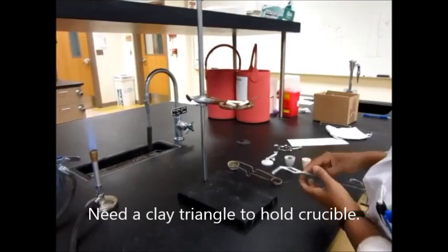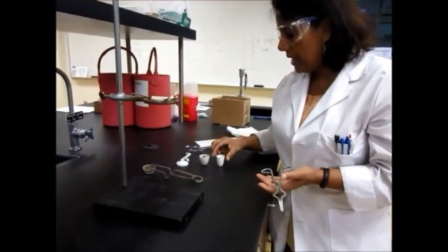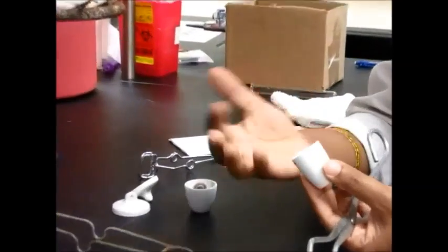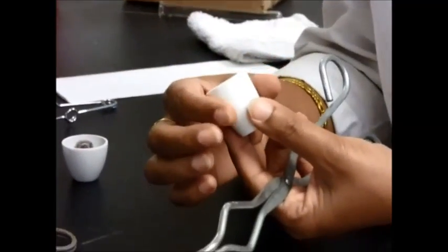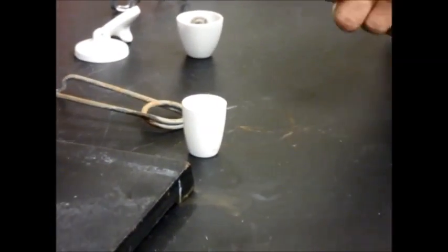You're never going to touch a crucible except for the first time when you have to fire a crucible. Other than that, you will never touch a crucible with hands because otherwise your hands will leave oil on the crucible and it will get contaminated. After the first time you never use your hands, you will always use the crucible tongs.